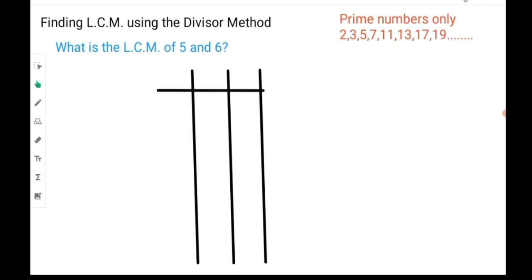The first example that we will be looking at is to find the LCM of 5 and 6. As you can see, we already have our table drawn up here with two columns, one for 5 and one for 6. We are going to ask ourselves,